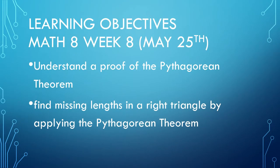Today's lesson will cover these objectives, which are the same as week 8 of the Math 8 BCPS Remote Learning Packet, which is the week of May 25th, Memorial Day. Students will understand a proof of the Pythagorean theorem and find missing lengths in the right triangle by applying the Pythagorean theorem.